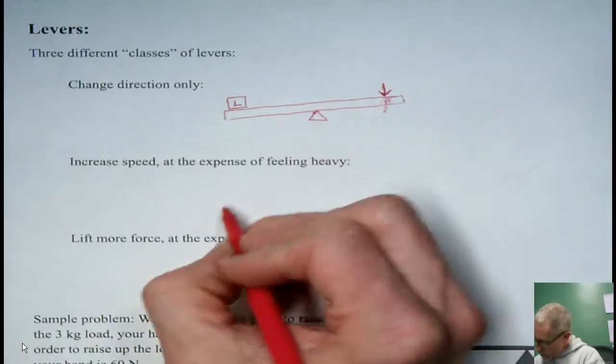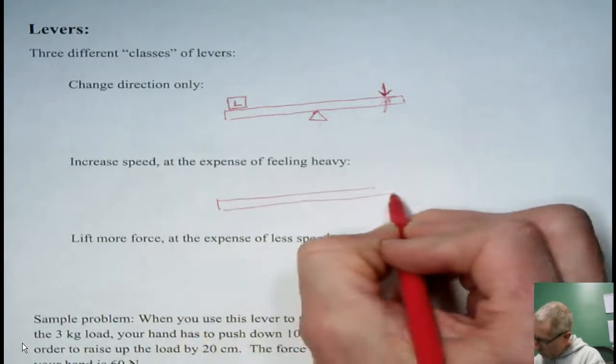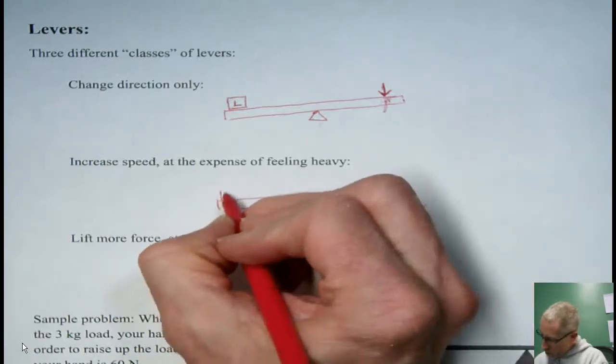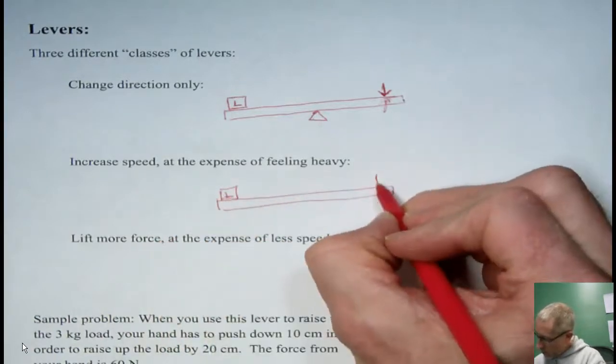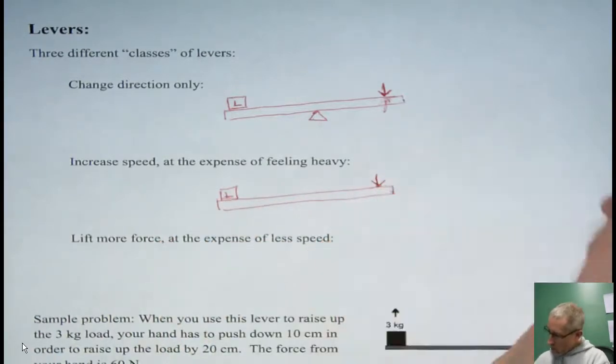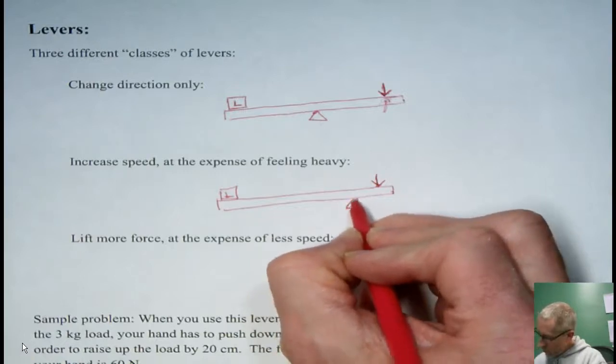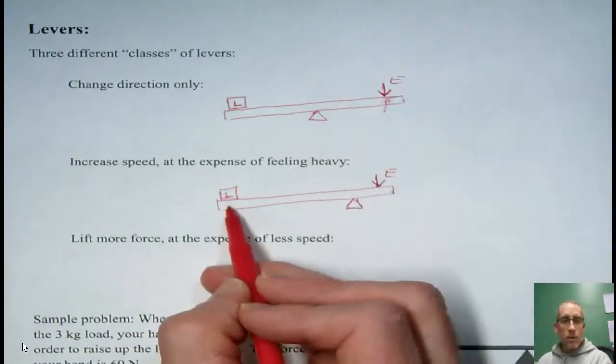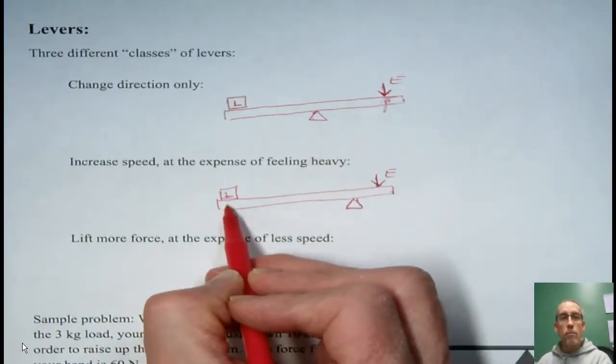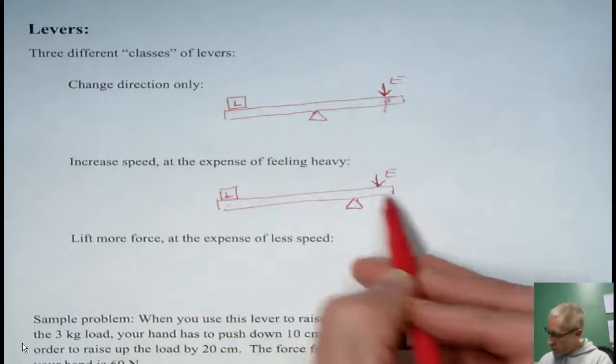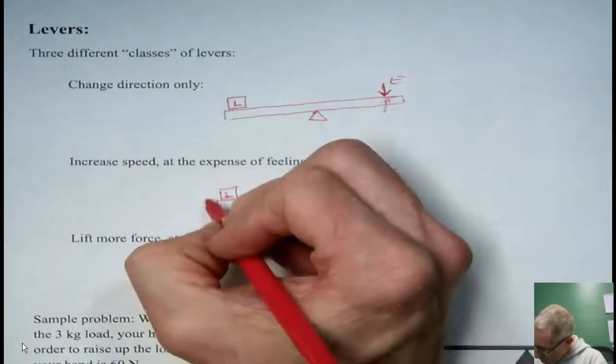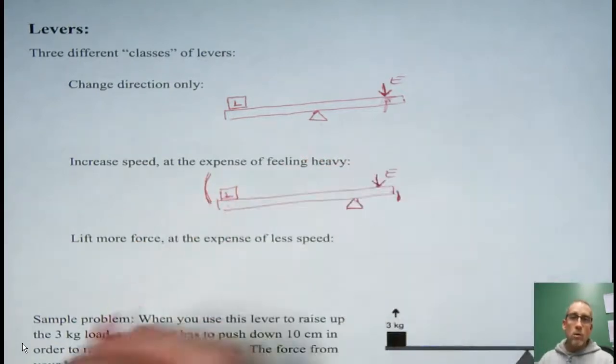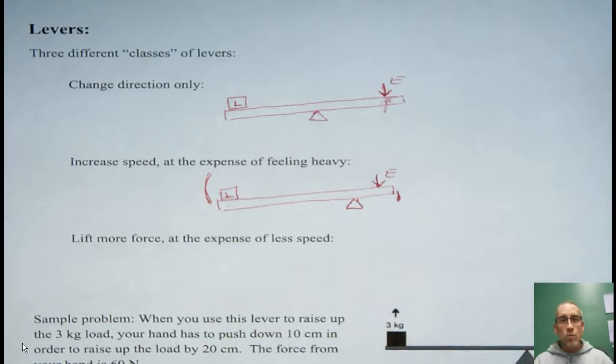But there's another way we can work a lever. We put the load at this end again and the effort at this end. But this time if the pivot point is very close to the effort then that's going to make this end of the lever move much farther than this end does. So you can see just a tiny little motion here is going to cause a much greater motion over here. So the end result is we get much more speed. So sometimes if speed is what you're after then you can set up a lever like this and it'll move very fast.